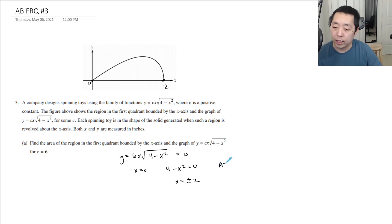To find the total area, I'm going to integrate from 0 to 2 of just the function 6x√(4-x²) dx.